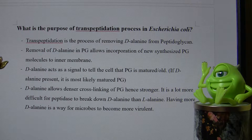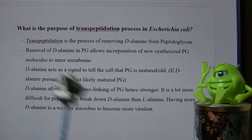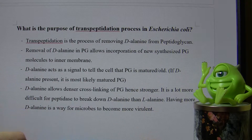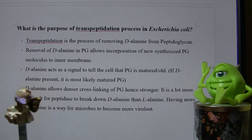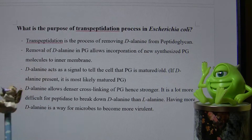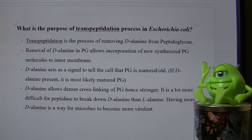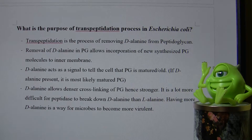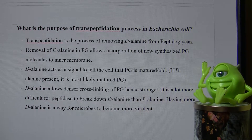Going back to the question: removal of D-alanine helps incorporate newly synthesized peptidoglycan molecules into the inner membrane. You always want to start adding new material closest to where it was made in the cytoplasm, so it gets incorporated into the inner membrane. The older peptidoglycan molecules are then pushed to the outer membrane, since E. coli has an outer membrane, and eventually they get rid of it from there.